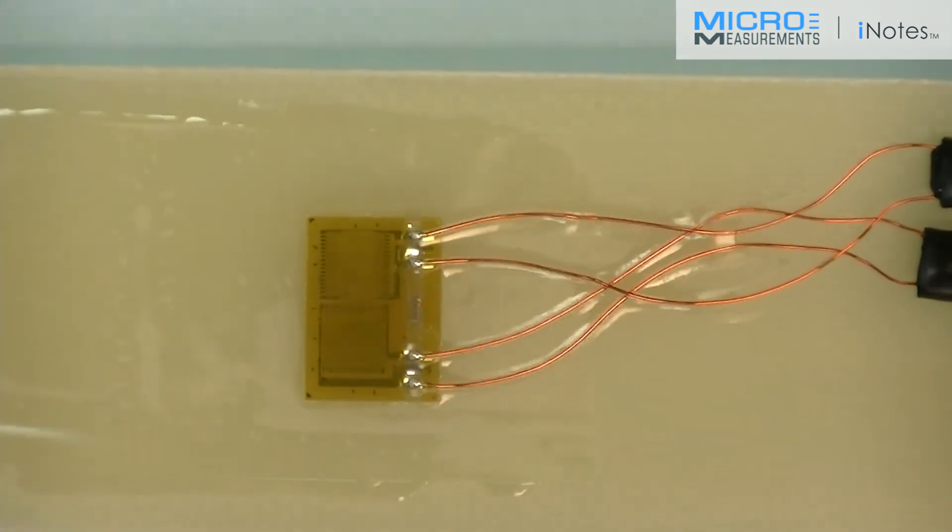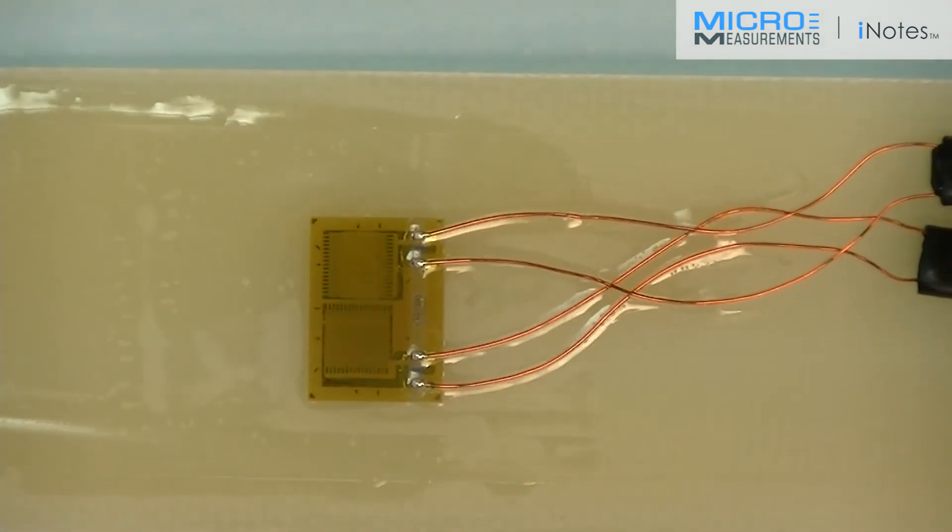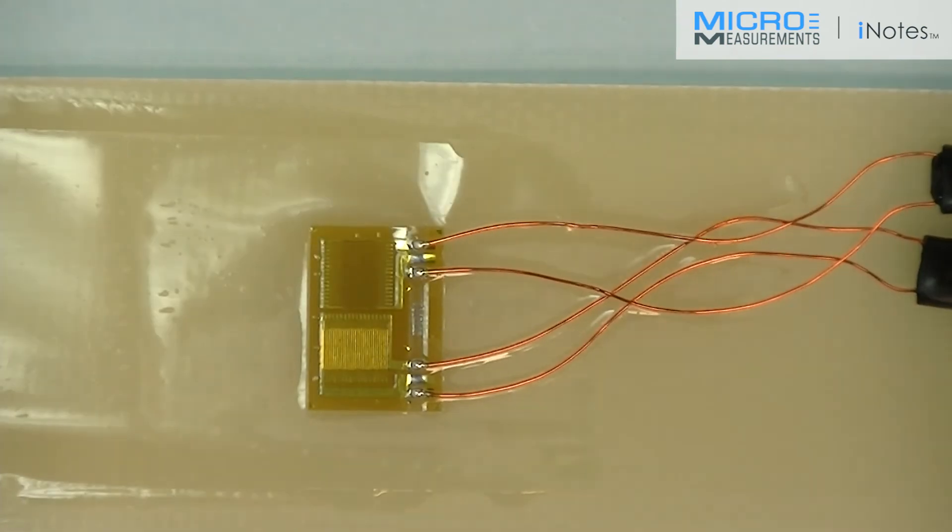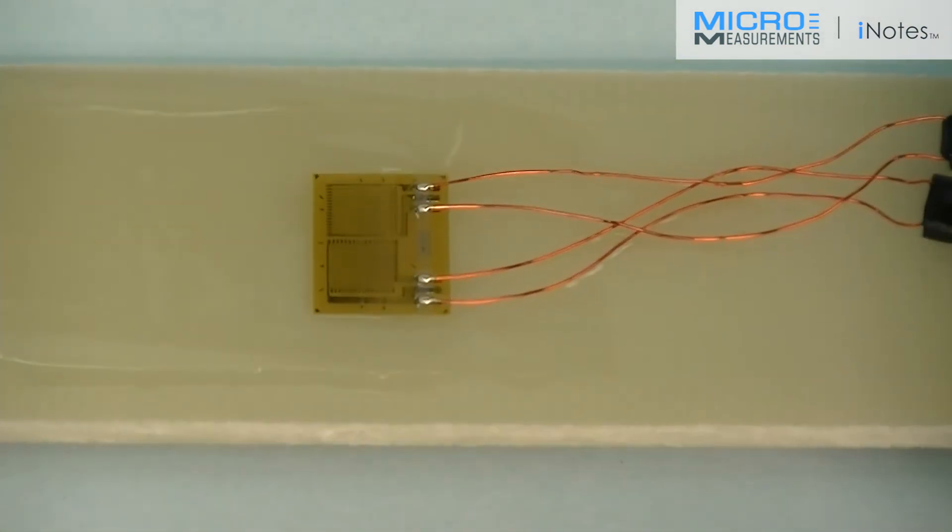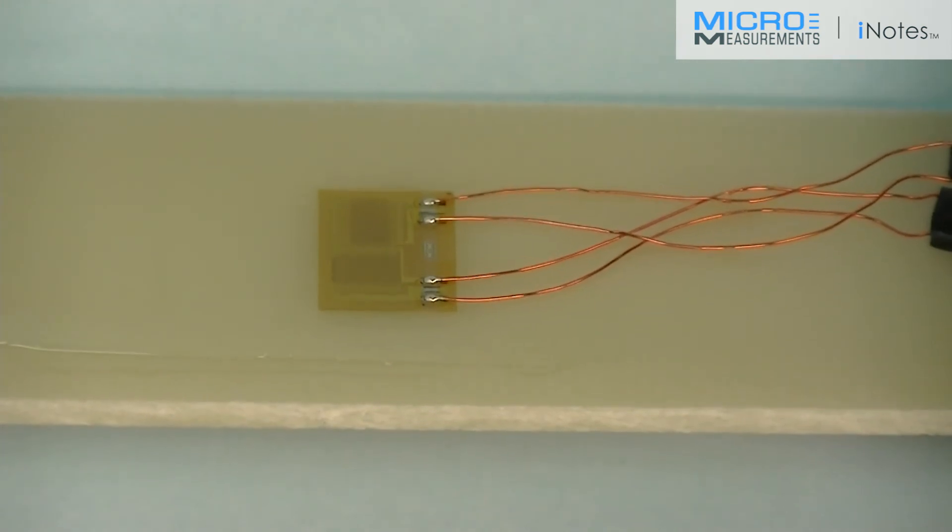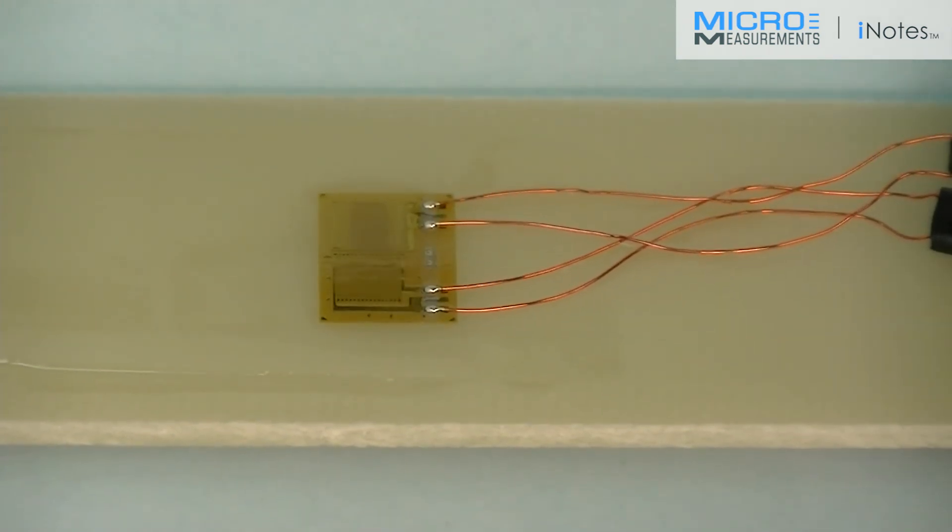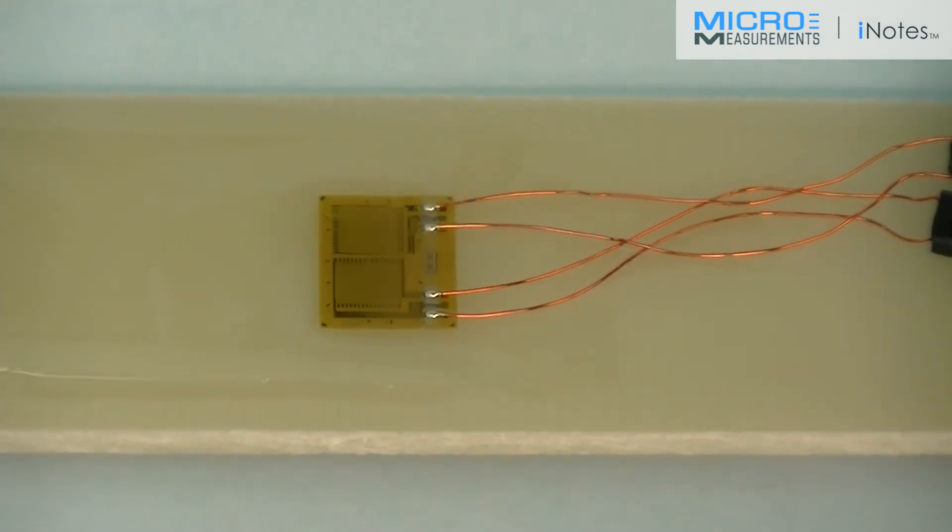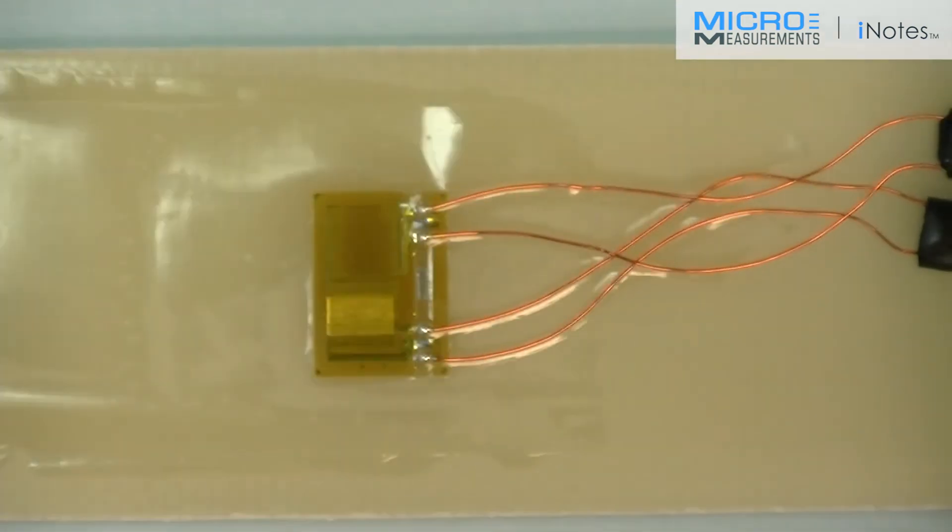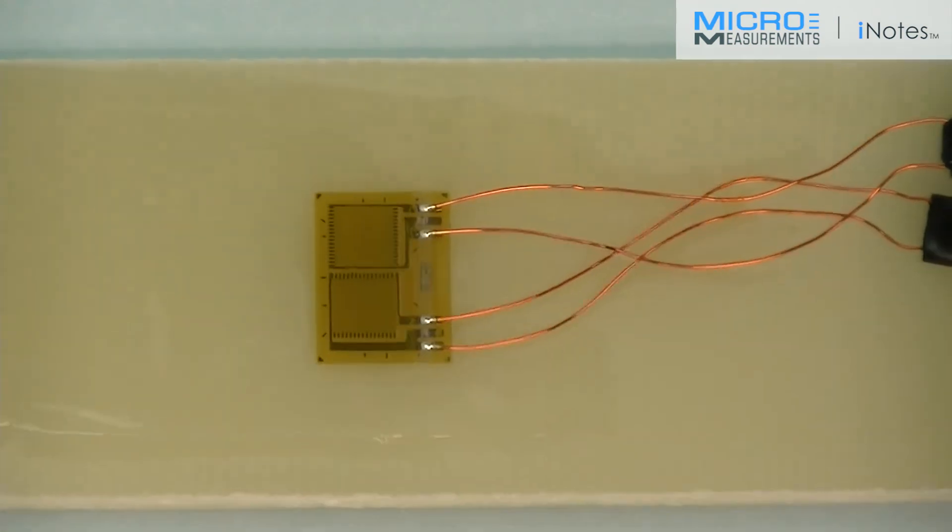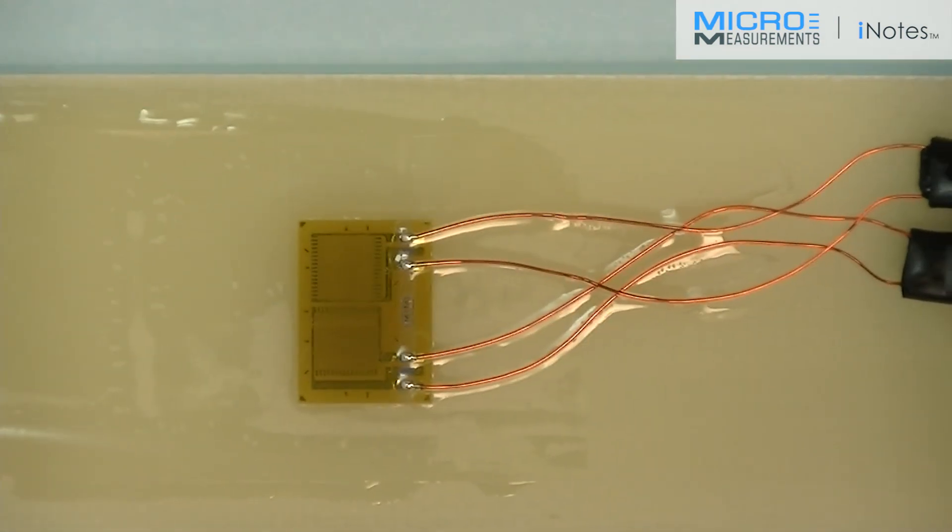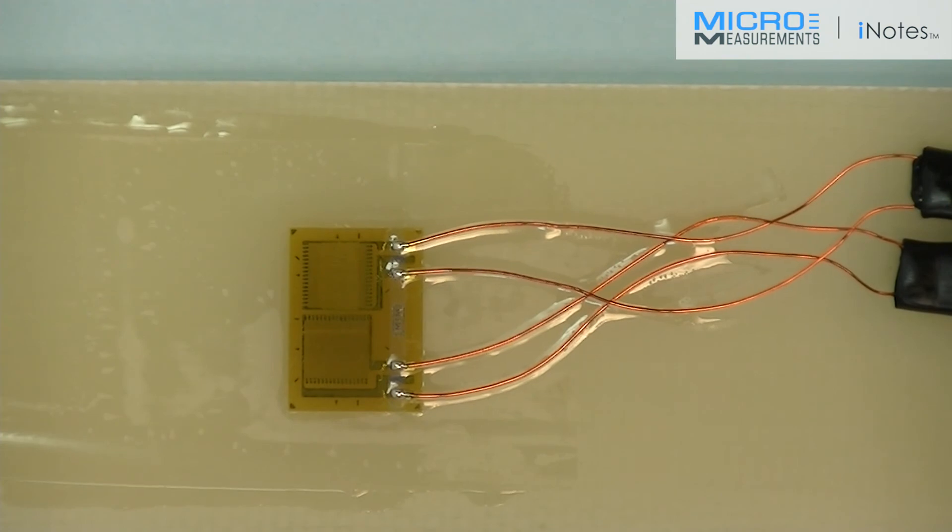We're looking for a uniform bond line color. We're looking for the little fillet around the edge. We're looking for any debris that might have been trapped underneath the gauge and caused it to have a look of a tent pole or some sort of a discontinuous surface. But it appears based on my quick visual inspection that this gauge is fairly well bonded and should make a great C2A installation.